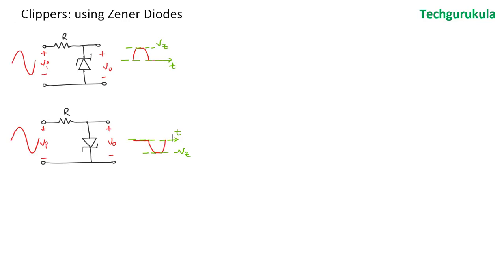We have seen two circuits in the previous video. The first circuit was giving us the positive half of the wave, working with reference VZ — anything above it was being clipped, and it was not allowing even the negative half of the wave. The second circuit was giving us only the negative half of the wave, clipping a portion less than minus VZ, the breakdown voltage of that diode.